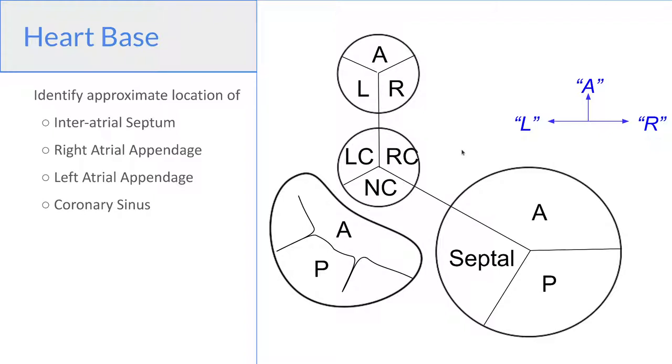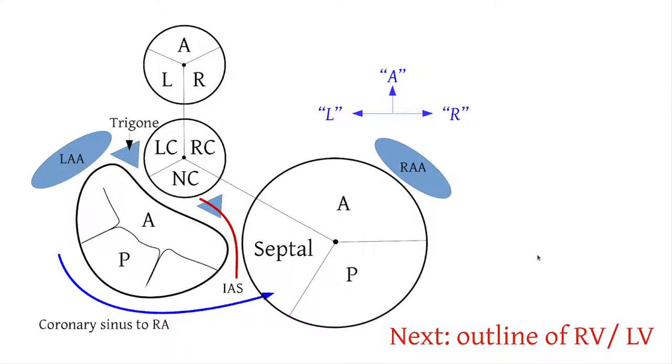So now with this diagram in mind, we're again looking from the atrial side towards the ventricles. Picture where the intra-atrial septum would be, where the right atrial and left atrial appendages would be, and where the coronary sinus would be. You can see the intra-atrial septum separates the right atrium that would be over the tricuspid valve from the left atrium that would be over the mitral valve. The coronary sinus travels behind the mitral valve annulus into the right atrium.